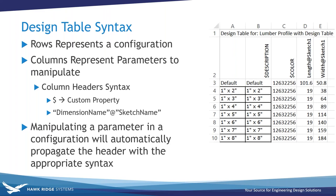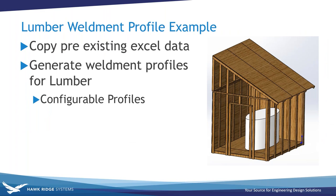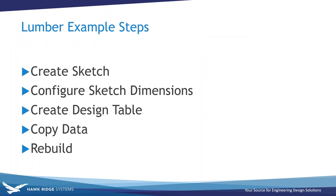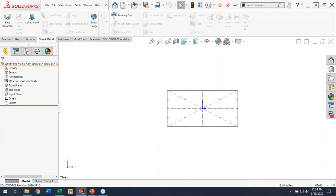I'm going to demonstrate that workflow by copying some existing data from Excel into my design table to generate a configured weldment profile for most stock lumber. SOLIDWORKS weldments comes with a vast library for metal structural members, but it also works well for carpentry and structural woodworking. The steps: make a new sketch for the weldment profile, configure some sketch dimensions so there's a difference for SOLIDWORKS to detect, then create the design table — so it will automatically propagate — then copy data from another table, paste it in, rebuild, and voila.